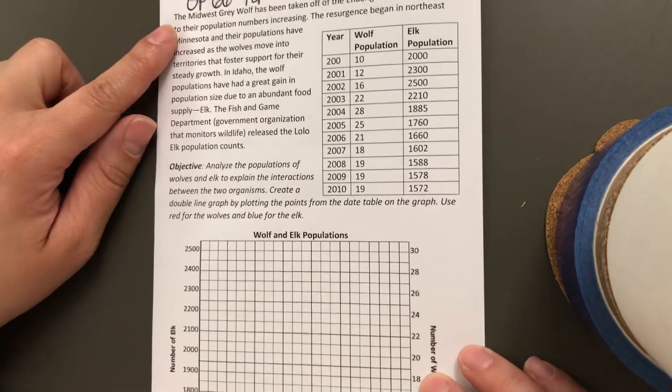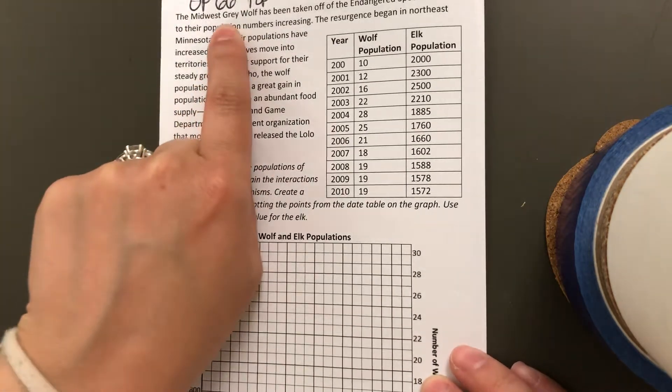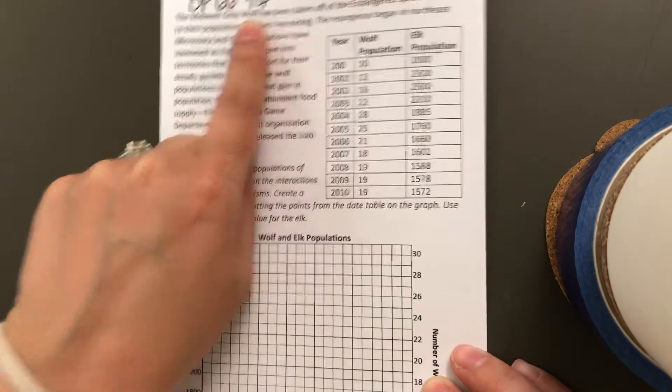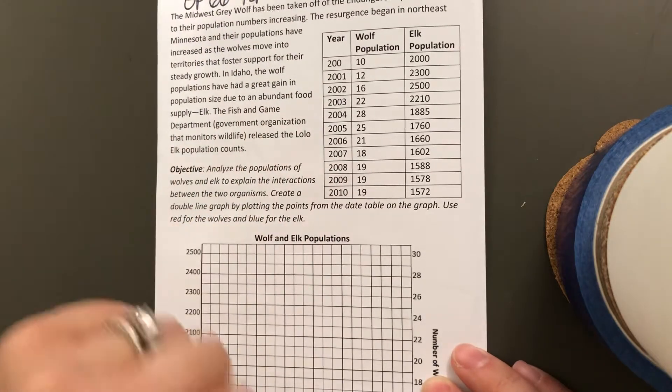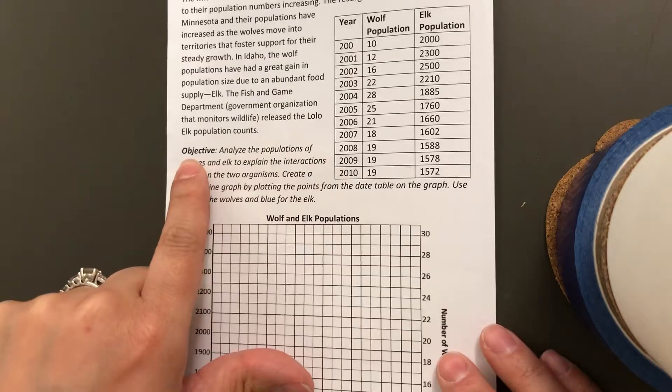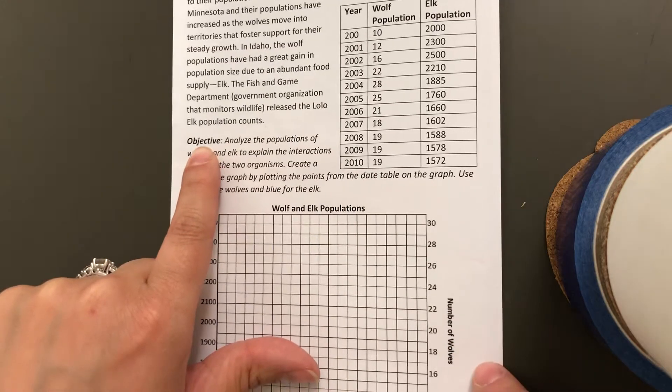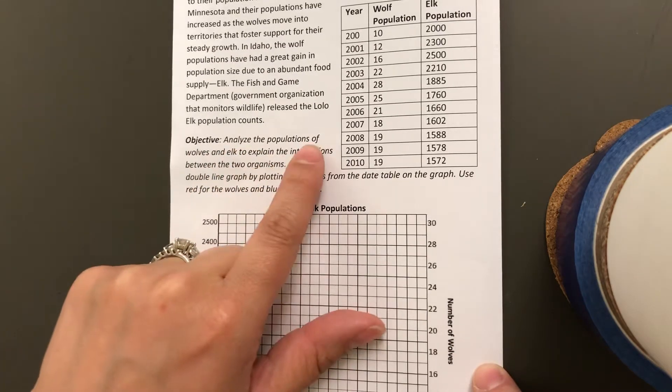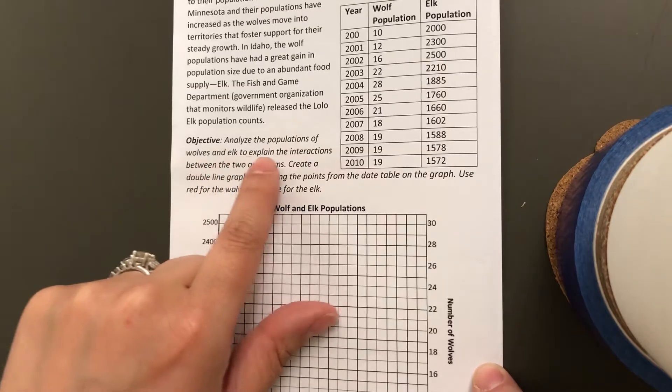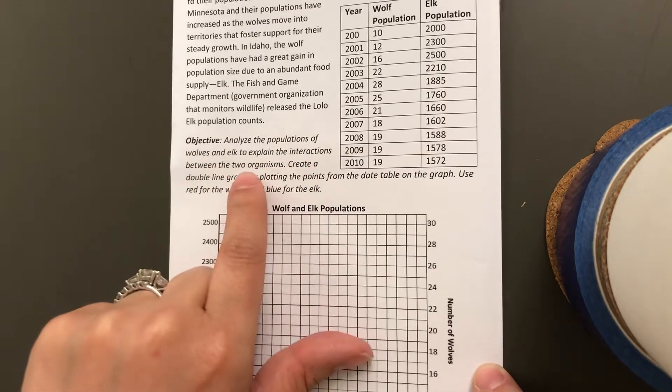After you've read through the premise of the populations of gray wolf and elk being analyzed, you're going to see that the objective is to analyze the populations of wolves and elk to explain the interactions between the two organisms.